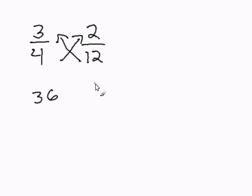4 times 2 is 8, and that points to the right, so I write 8 on the right hand side.